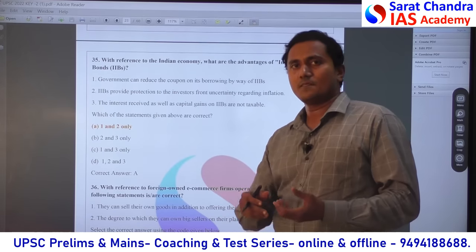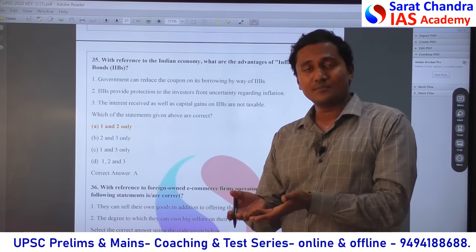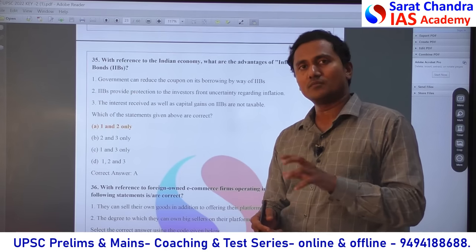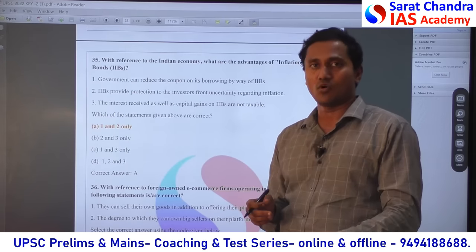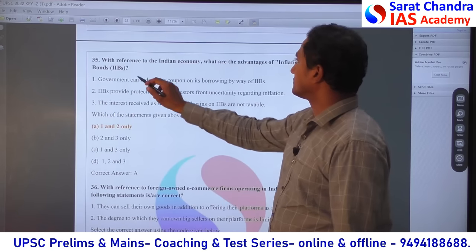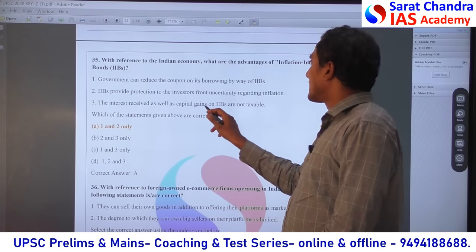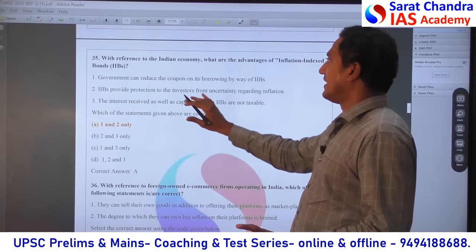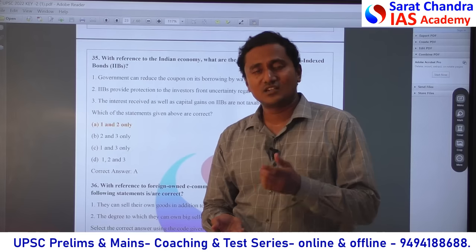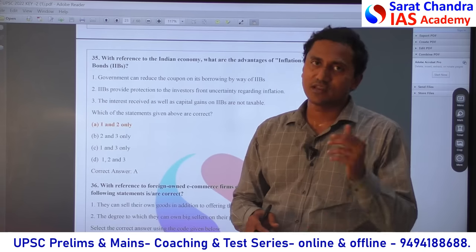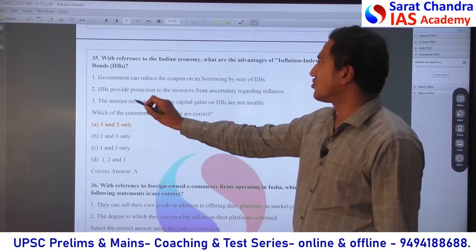Inflation Indexed Bonds — if I purchase a bond, I may be afraid that if inflation increases very fast, the bond value may stay the same. To solve this problem, they sell inflation indexed bonds so that if inflation increases, the inflation amount is added to the bond, giving more income. Government can reduce the cost of its borrowing through IABs. IABs provide protection to investors regarding inflation. But there are no tax benefits on IABs — because IABs are already purchased to reduce the risk of inflation, so why would the government give additional tax benefits on low-risk products. By common sense you can understand that government will not give tax benefits on these kinds of less risky products. So statement 3 is wrong; answers are 1 and 2.